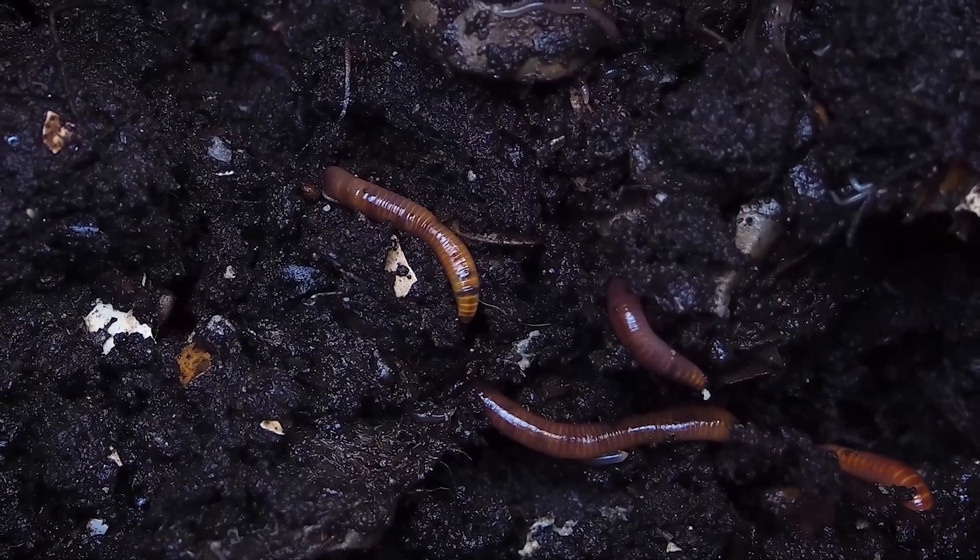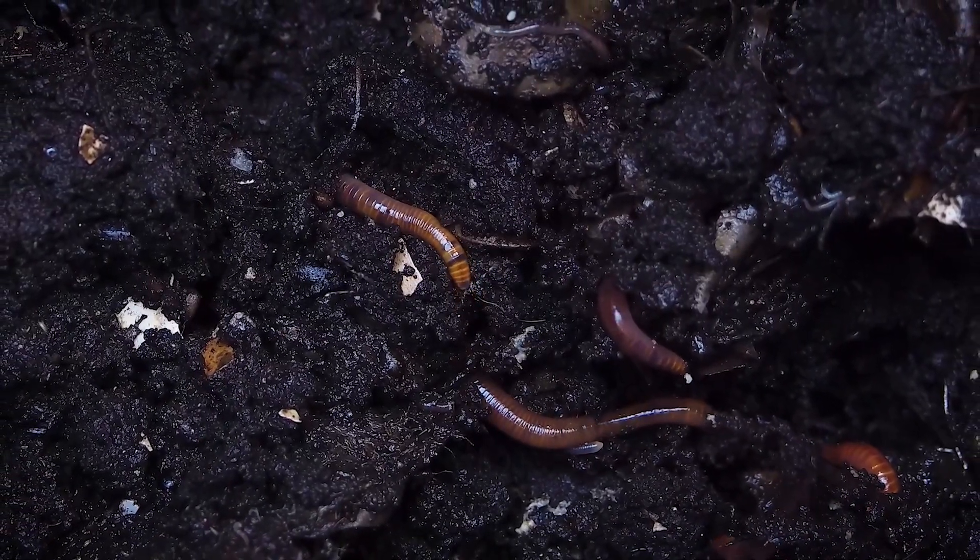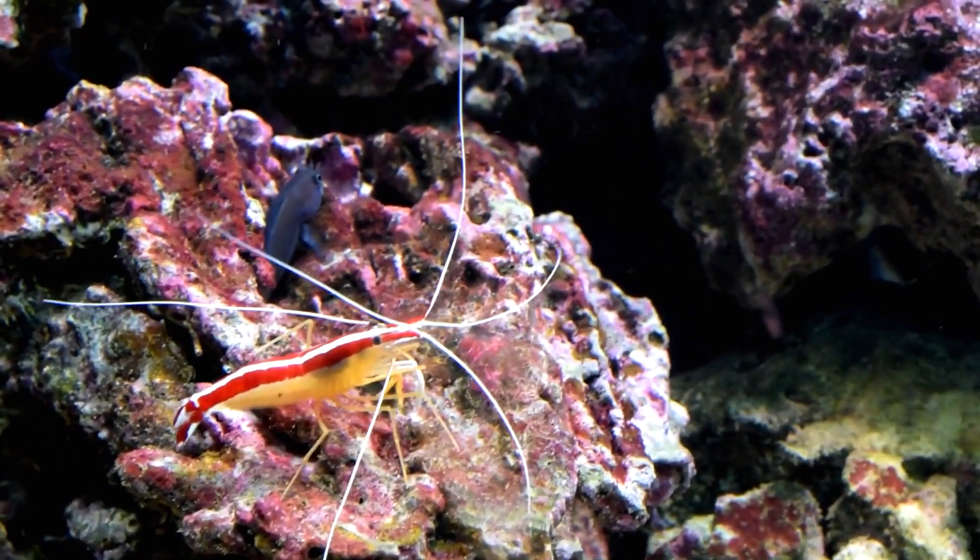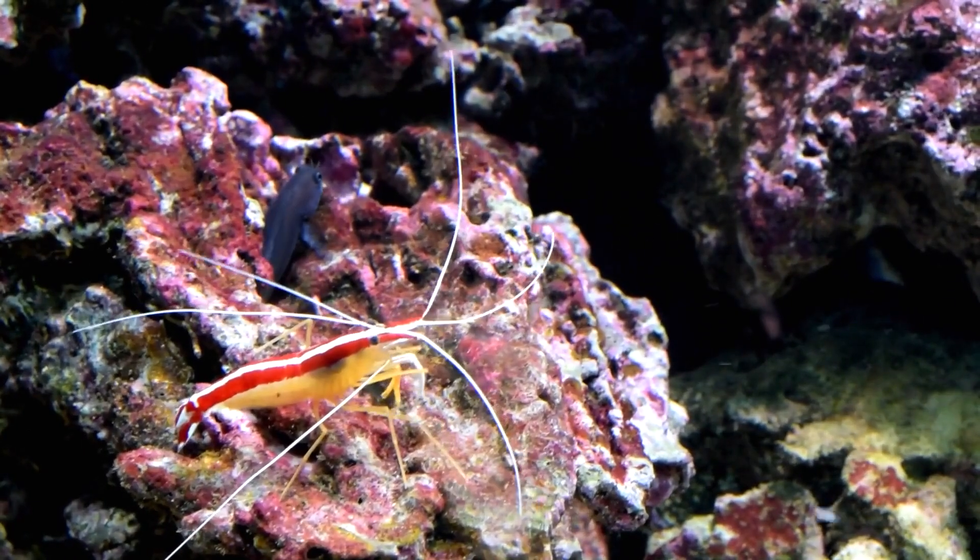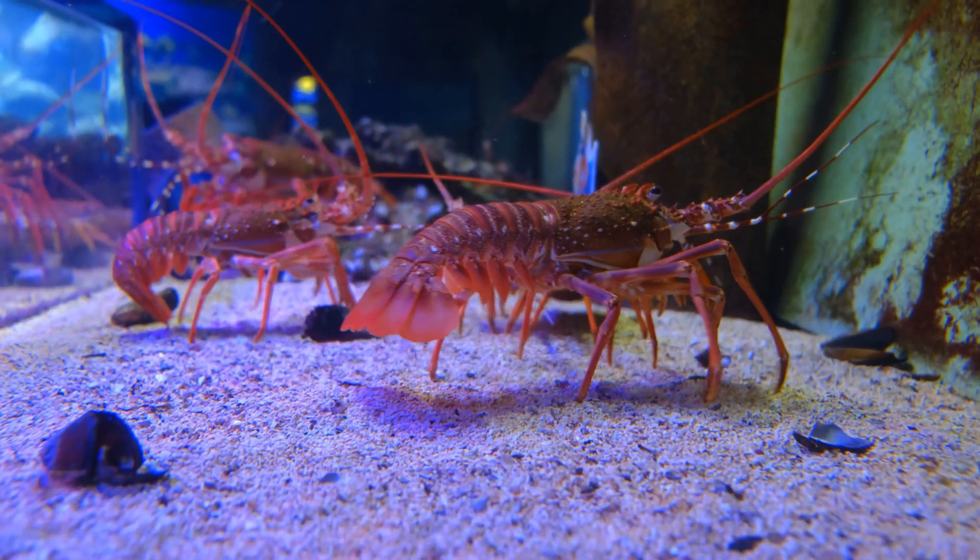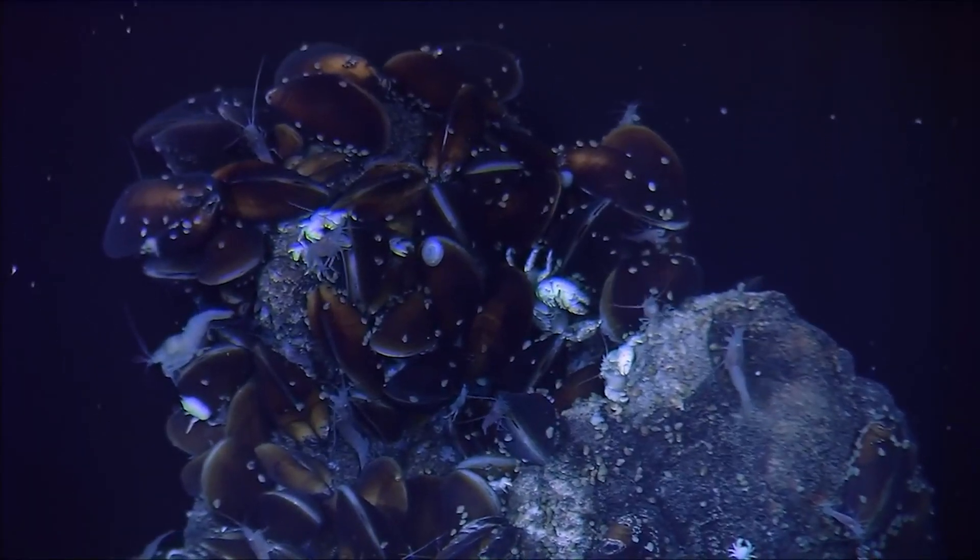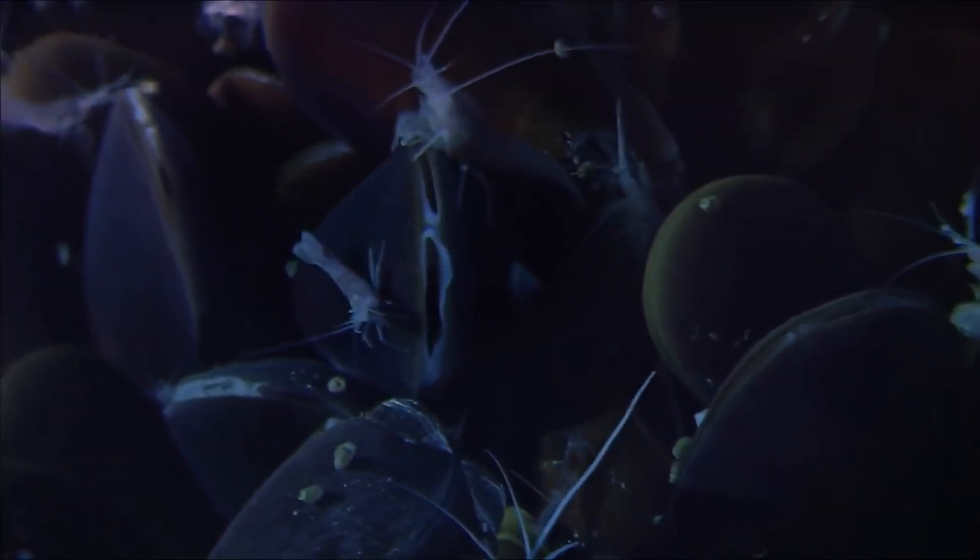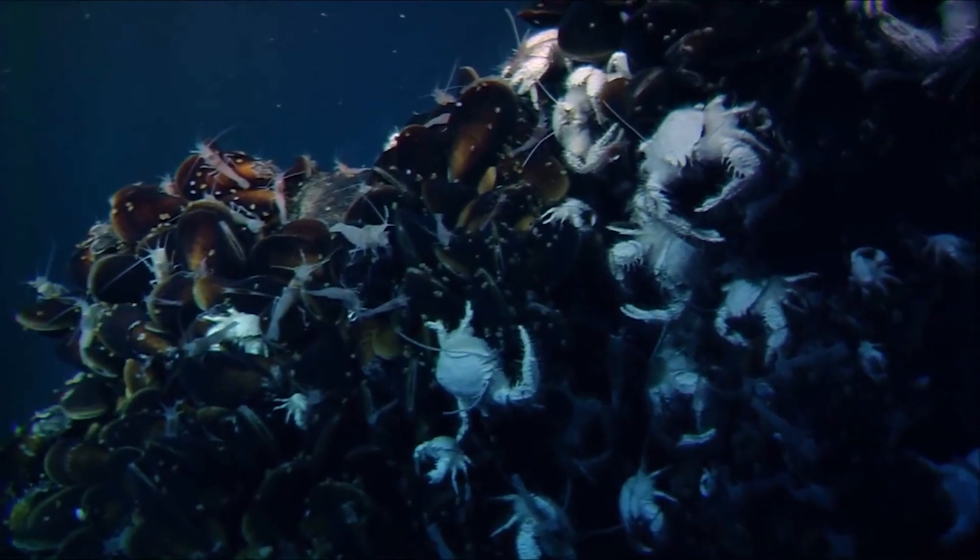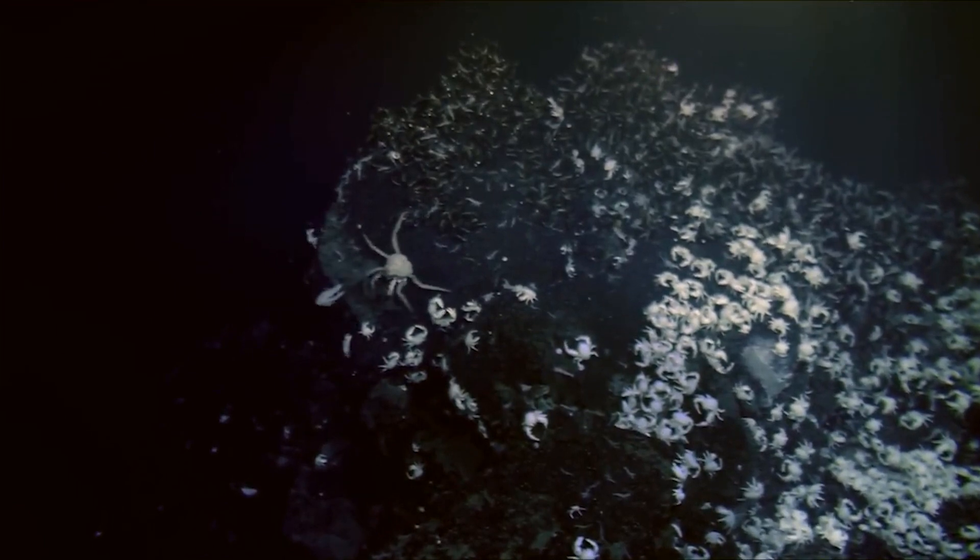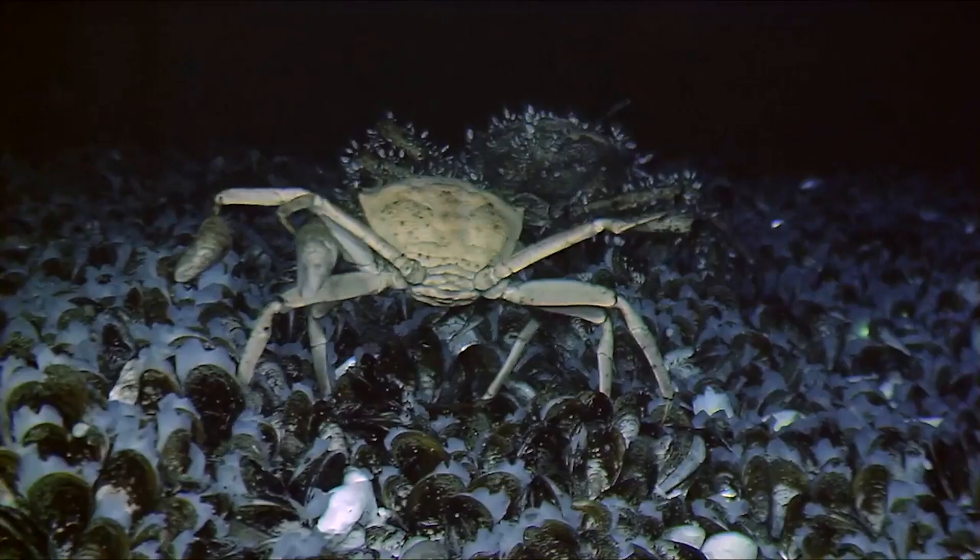Tube worms, which are unique to chemosynthetic ecosystems, often predominate in the Gulf of Mexico because they are foundation species that develop habitats for other species. The list of smaller species includes alvinella, shrimp, squat lobsters, limpet snails, and so forth. Because of the accessibility of food supplies, several animals may survive here. They can locate a place to hide as well as a solid surface to adhere to.